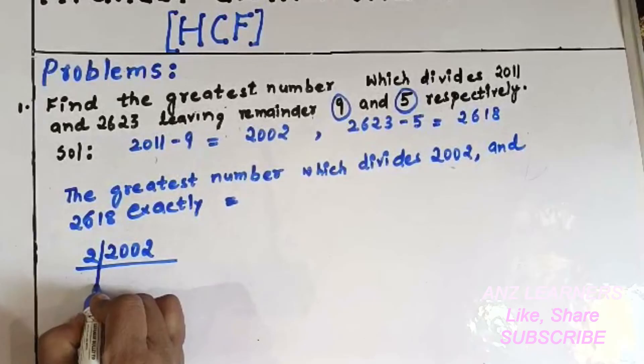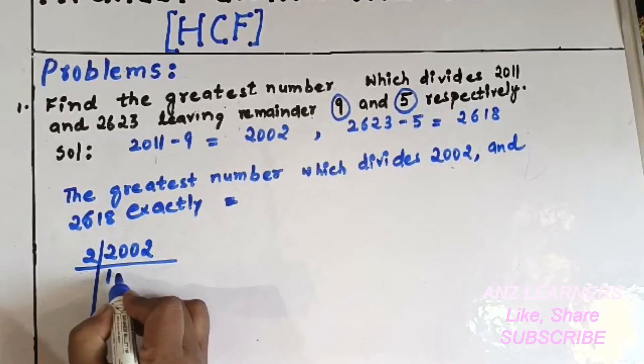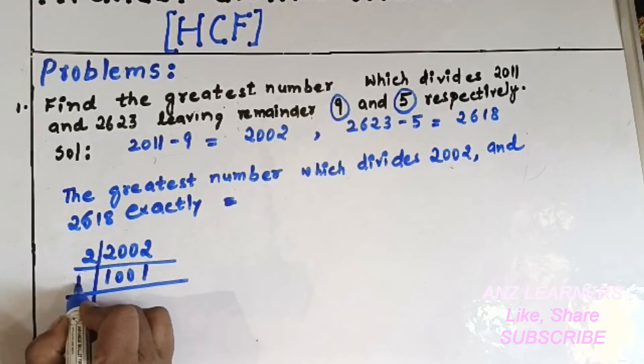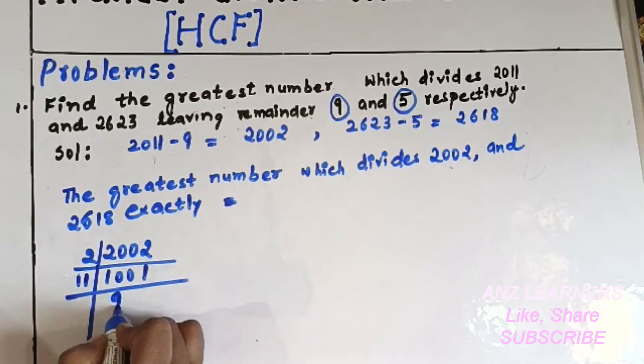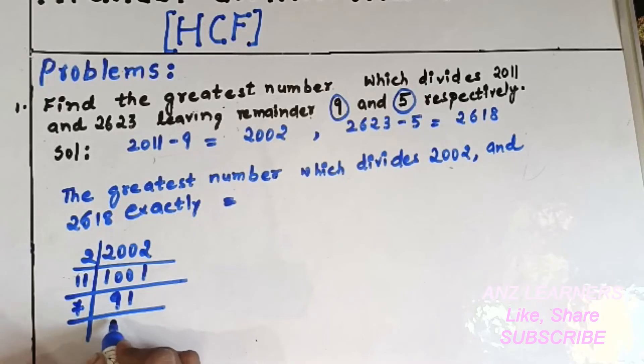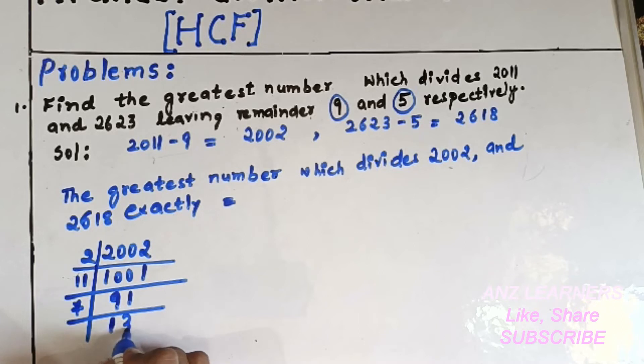for 2002, the factors will be... [performing prime factorization by division] 2, 1001, 11, 91, 7, 13. Right.